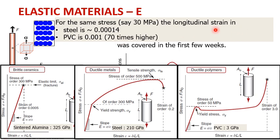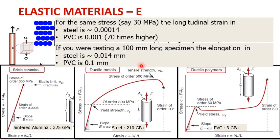If you consider a test specimen that is 100 millimeters in length and stretch it with 30 megapascals of stress, the amount of deformation for the steel specimen will be 100 times the strain value — 100 times 0.00014 — giving us 0.014 millimeters. As you can see, steel, which has a higher elastic modulus compared to PVC, will deform much less than PVC.